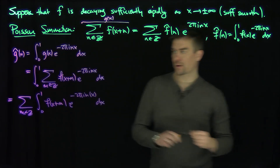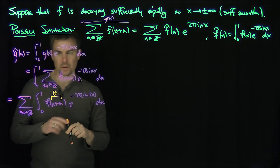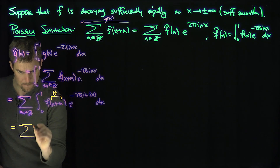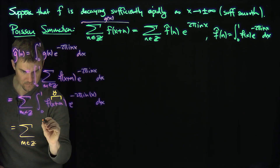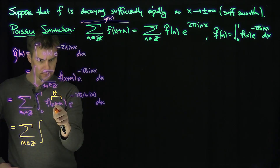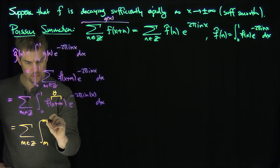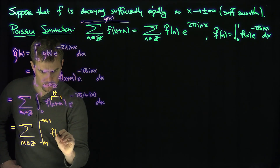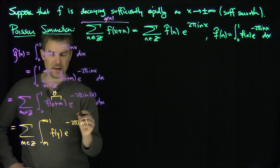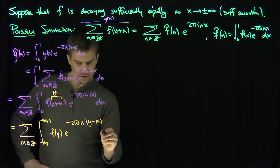And now we're going to shift. I'm going to let y equal x plus m. So when x equals 0, y equals m, and when x equals 1, y equals m plus 1. So this becomes the sum over m in Z of the integral from m to m plus 1 of f of y times e to the minus 2 pi i n times (y minus m) dy.